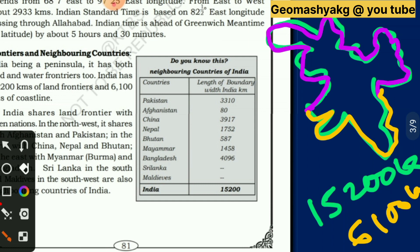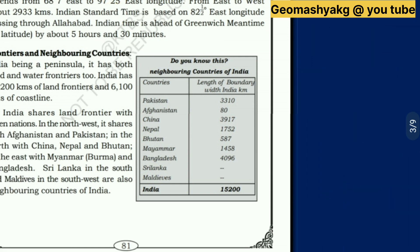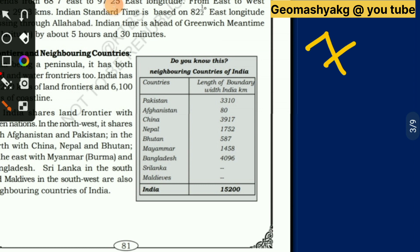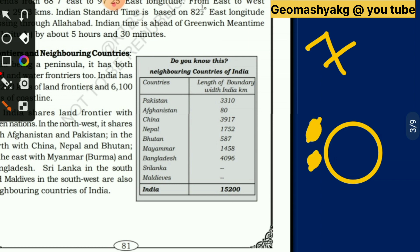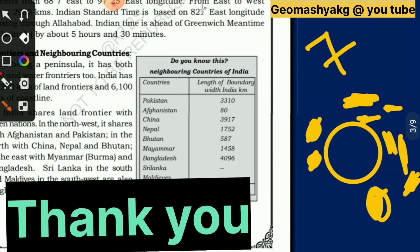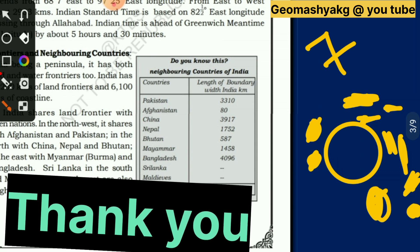India shares land frontier with seven nations. In the northwest it shares boundaries with Afghanistan and Pakistan. In the north it shares with China, Nepal, and Bhutan. In the east with Myanmar and Bangladesh. Sri Lanka in the south and Maldives in the southwest are also neighboring countries of India.